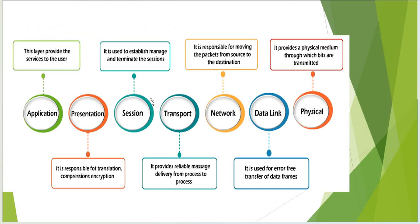Looking at the OSI layers one by one: the physical layer provides the physical medium through which bits are transmitted. When you transfer data, it is converted into binary form, split into bits, and moved to the next layer. The bit-formatted data then comes to the data link layer, where we ensure the data is error-free before transferring it into frames.